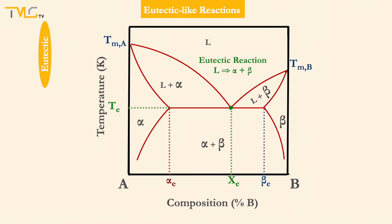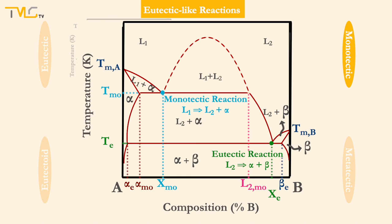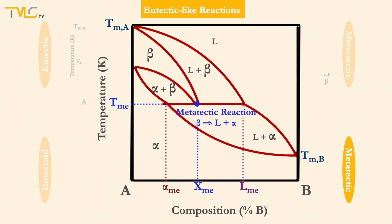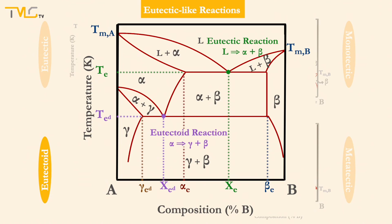Now we can take a brief look at some other eutectic-like systems, like monotectic, metatectic, and eutectoid systems. In monotectic systems, there exist two partially immiscible liquid phases called L1 and L2, so solidification does not start from a homogeneous liquid system. During the monotectic reaction, L1 transforms into L2 and one of the solid phases. In metatectic reactions, a solid phase transforms into another solid phase and a liquid phase. And lastly, in eutectoid reactions, a solid phase transforms into two new solid phases.